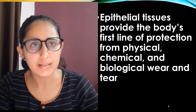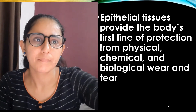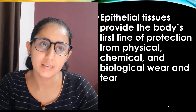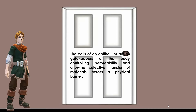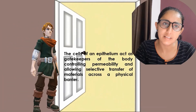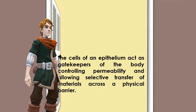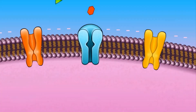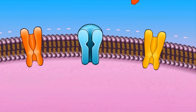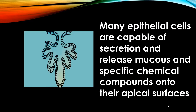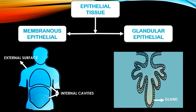Epithelial tissue provides the first line of protection from physical, chemical, and biological wear and tear. The cells act as gatekeepers of the body, controlling permeability and allowing selective transfer of materials across a physical layer. Selective permeability allows only certain molecules to enter and exit while blocking others. Many epithelial cells are capable of secretion, releasing mucus and specific chemical compounds onto their apical surface — these are called glands.